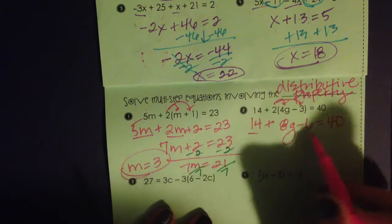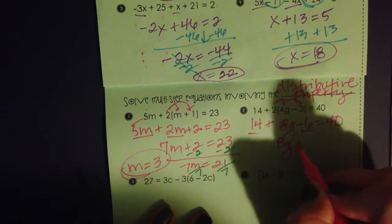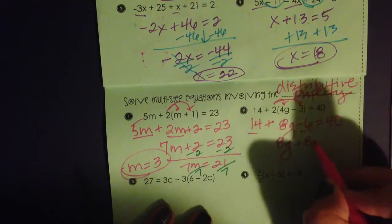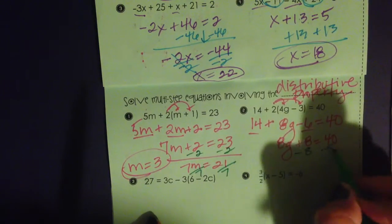My like terms are going to be 14 minus 6, so 8g plus 8. 14 minus 6 is going to leave me with 8. And then I'll start. Oh, that's better already. Cool. Thank you.